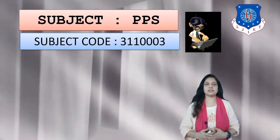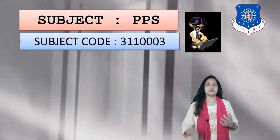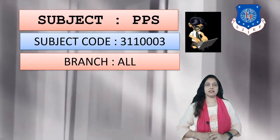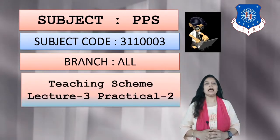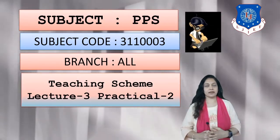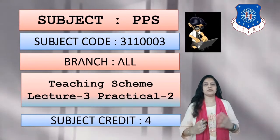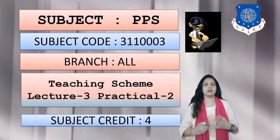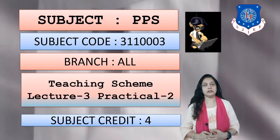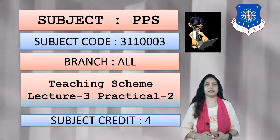The subject code is 3111003. This subject is offered in all branches of engineering in first year. The teaching scheme for the subject is three lectures and two hours of practicals per week, and the subject credit is four. This credit is useful for calculation of the final result in terms of SPI and CPI.